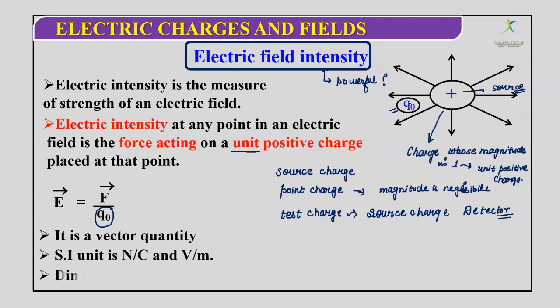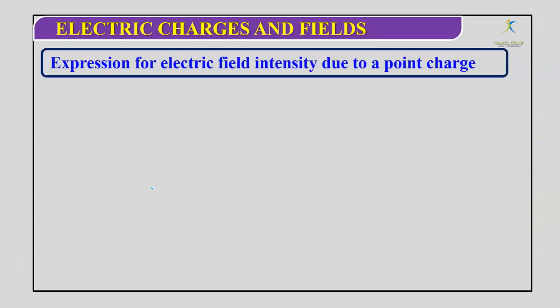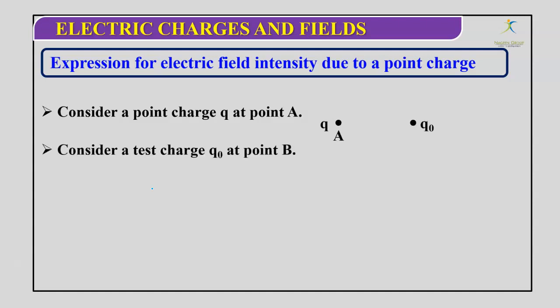The SI unit of electric field intensity is Newton per Coulomb and Volt per meter. The dimensions are Newton per Coulomb where Newton is MLT⁻² and Coulomb is AT, giving final dimensions ML T⁻³ A⁻¹. For the expression of electric field intensity due to a point charge, we consider a point charge at A and a test charge at B, with distance r between them. n̂ is the unit vector from A to B.